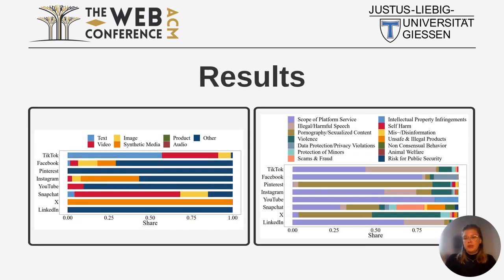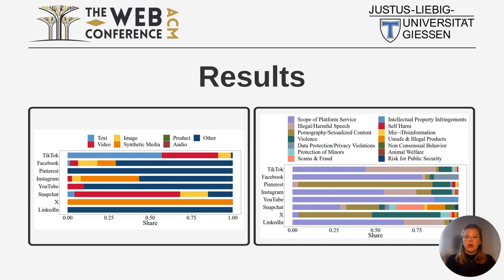Turning to some of our results, as you can see in the figures, we observed strong differences in the platform-specific moderation of different content types, with a large share being classified as other. Regarding the reasons why content was moderated, we observed that while most platforms focus on content that is out of the scope of platform service, particularly Pinterest and X focus more on pornographic and also violent content.